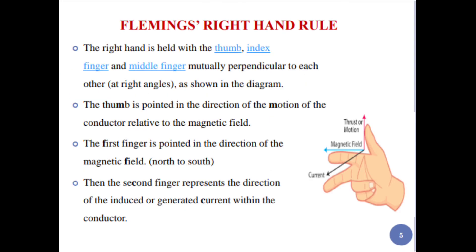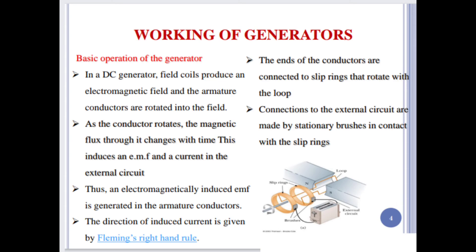Now, the working of generators — basic operation. In a DC generator, field coils produce an electromagnetic field and the armature conductors are rotated into that field. The field coils produce the electromagnetic field and the armature conductors rotate within that field.